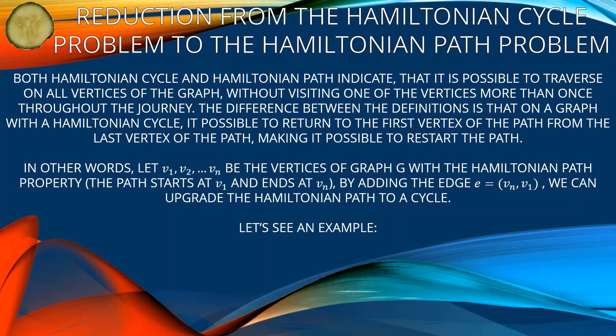Both Hamiltonian cycle and Hamiltonian path indicate that it is possible to traverse all vertices of the graph without visiting any vertex more than once. The difference is that on a graph with a Hamiltonian cycle, it is possible to return to the first vertex of the path from the last vertex of the path.